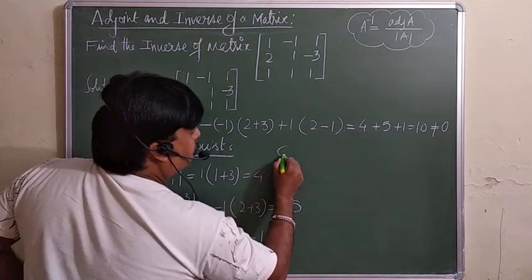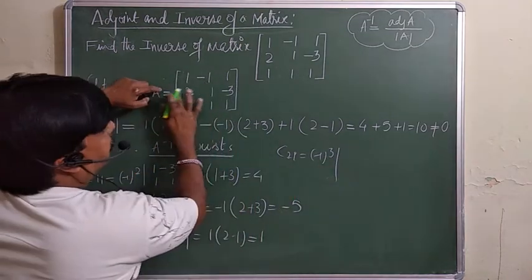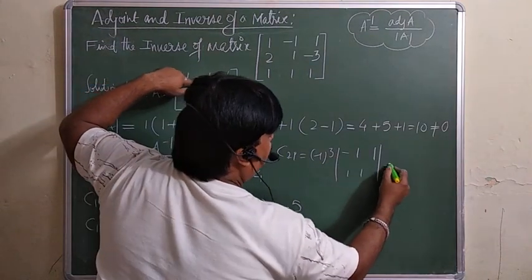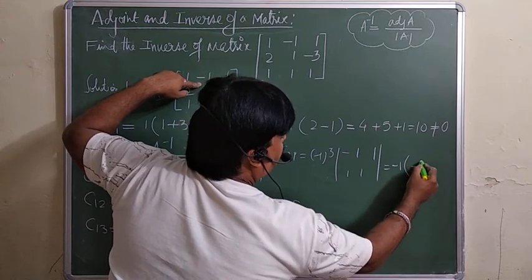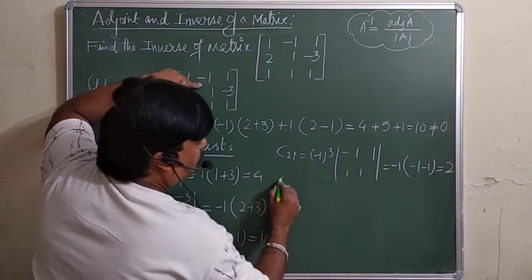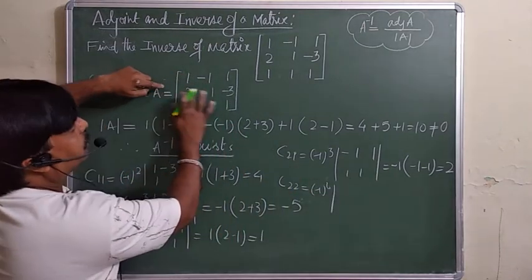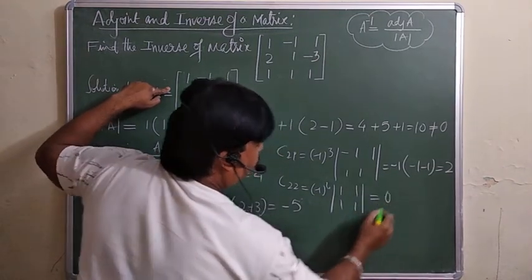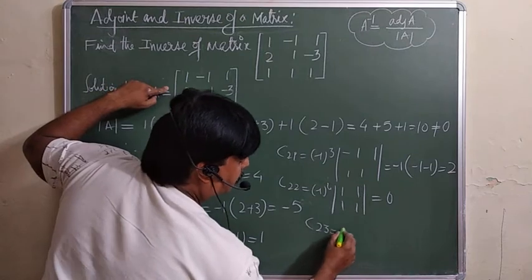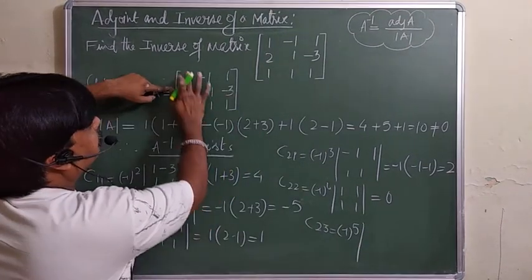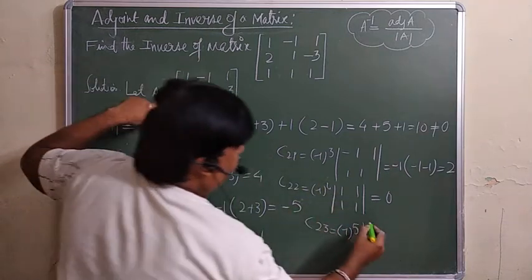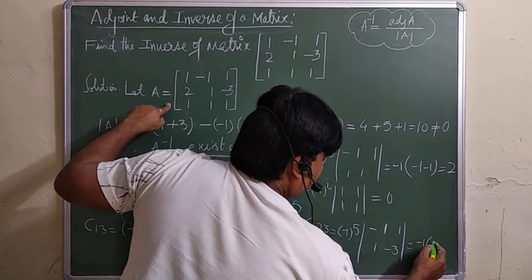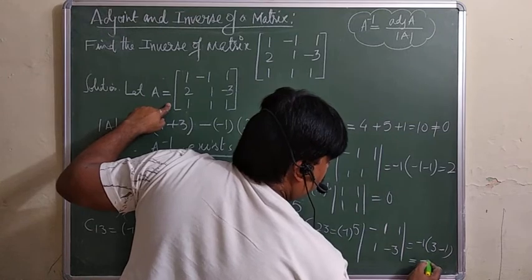Continuing cofactors: C_21 = (−1)^3 × (−1×1 − 1×1) = (−1)×(−2) = 2. C_22 = (−1)^4 × (1×1 − 1×1) = 0. C_23 = (−1)^5 × (1×(−3) − 1×1) = −1×(−3−1) = −(−4)... giving −2.